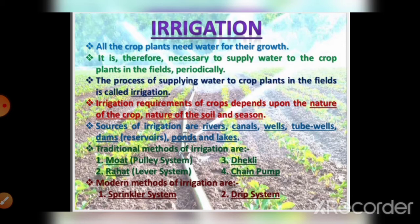Traditional irrigation methods include the moat system, rahat, and chain pump system — your homework is to find out what the moat, rahat, and chain pump systems did in earlier times. The modern system of irrigation includes especially sprinkler and drip irrigation. Sprinkler irrigation sprays water over the crops. Drip irrigation delivers water drop by drop directly to the plant roots. I have already sent the videos of drip irrigation and sprinkler systems to you.